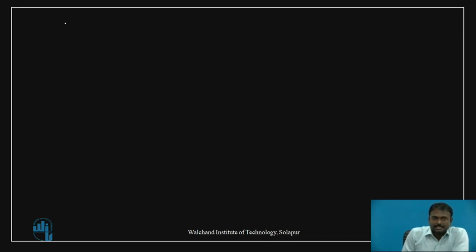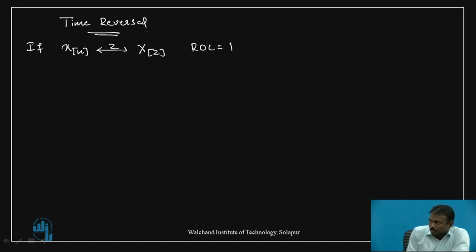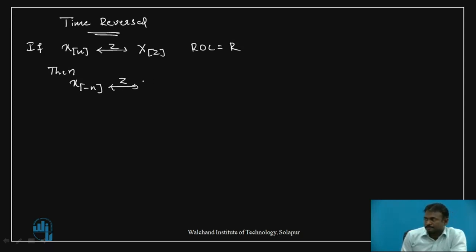Now let us discuss the time reversal property. Time reversal property states that if X of N is a discrete time signal, then Z-transform of X of N is equal to X of Z with ROC equal to R. Then Z-transform of X of minus N is equal to X of 1 by Z with ROC equal to 1 by R.